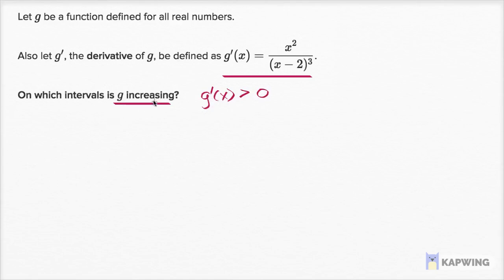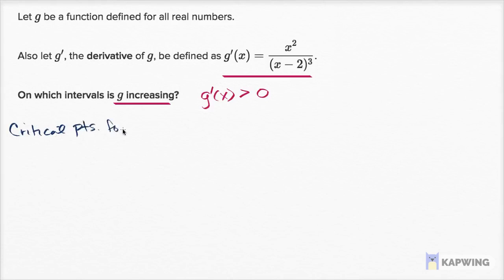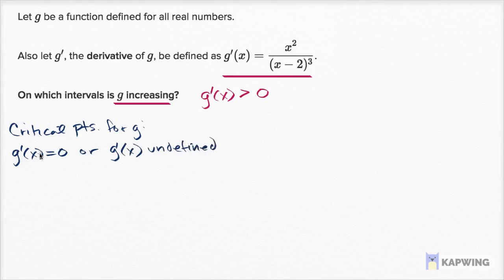We could approach this by inspecting the structure or more methodically by finding critical points for g. Critical points occur when g prime of x equals zero or g prime of x is undefined — those are the possible places where the sign of g prime could change. When is g prime of x equal to zero? Only when the numerator x squared equals zero, so x equals zero.